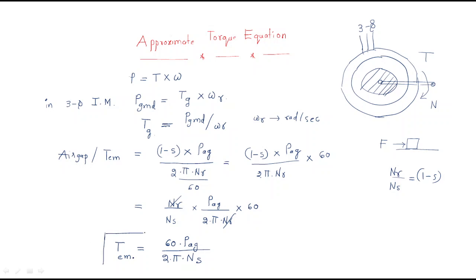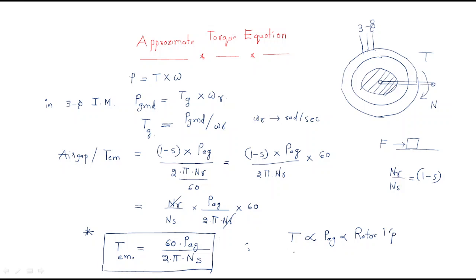The remaining air gap torque or electromagnetic torque developed in the air gap of the induction motor equals 60 times air gap power divided by 2π N_s. Observing this equation, electromagnetic torque is proportional to air gap power, which equals rotor input. Torque is also inversely proportional to synchronous speed N_s.